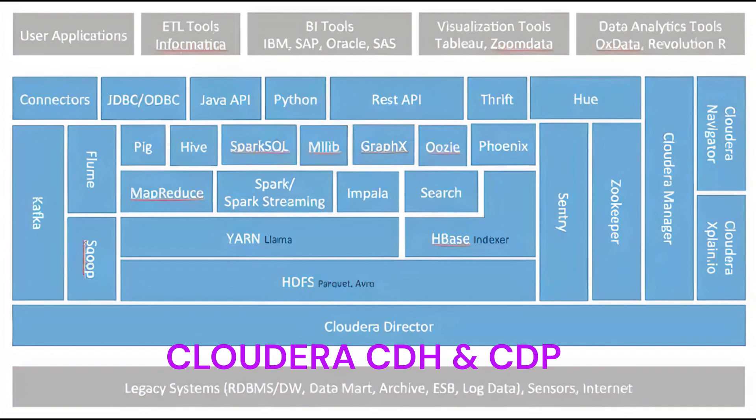However, it's important to note that Cloudera has since merged with Hortonworks, another major Hadoop distribution provider, and as a result, Cloudera now offers the Cloudera Data Platform, CDP, as its primary platform, which supersedes CDH. CDP is a cloud-native platform that includes many of the same components as CDH, but is designed for hybrid and multi-cloud environments and includes additional features and improvements.